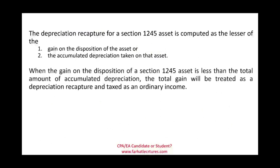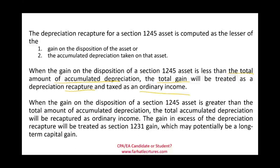When the gain on the disposition is less than the total amount of depreciation, the total gain will be treated as depreciation recapture ordinary income. When the gain on the disposition of Section 1245 is greater than the amount of accumulated depreciation, the total accumulated depreciation will be recaptured as ordinary income. The gain in excess of the depreciation recapture will be treated as Section 1231 gain, which may potentially be long-term capital gain, assuming you held the asset for more than a year.